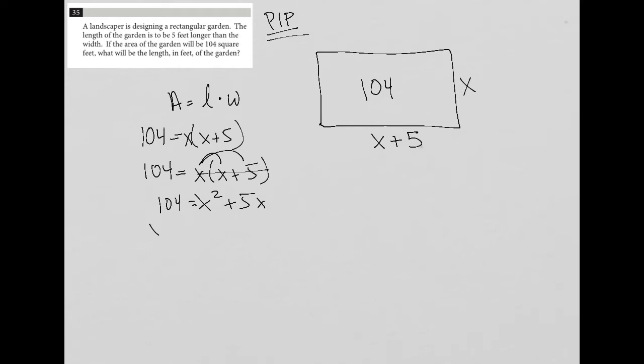So then I can subtract 104. So X squared plus five X minus 104 equals zero. I don't immediately see how to factor that. Typically when I'm looking to factor a trinomial, I want to see, are there two numbers that multiply to equal 104, or negative 104 I should say, but add up to positive five.